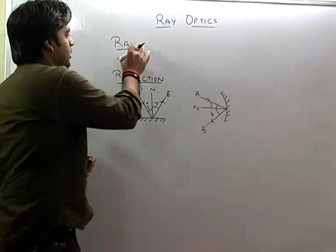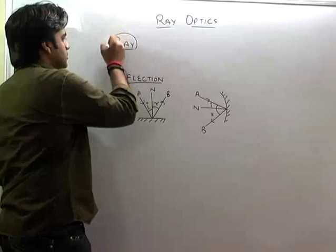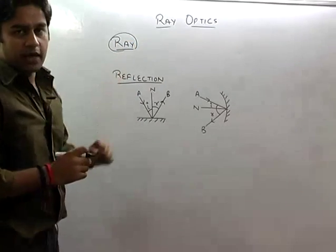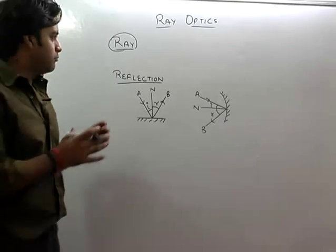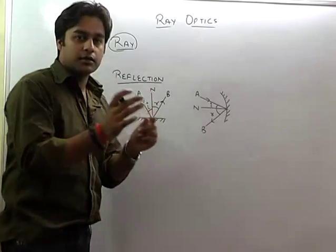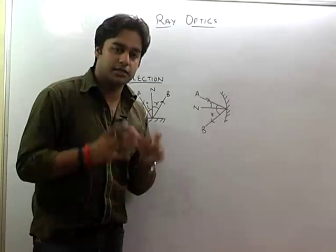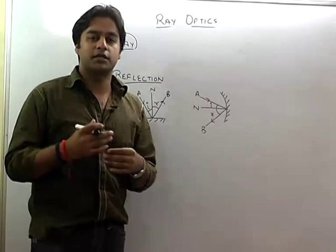First of all, ray is a beam of light. Beam of light is a collection of rays. When the sun rays come through, they come as a collection of rays.